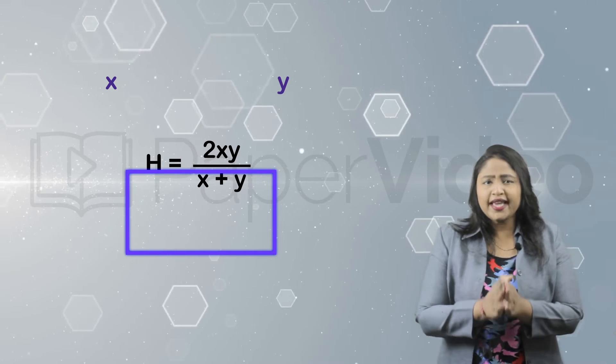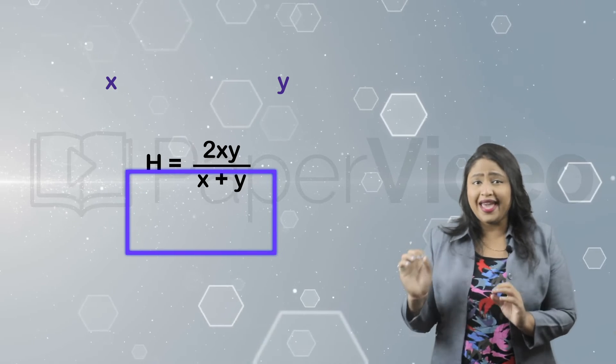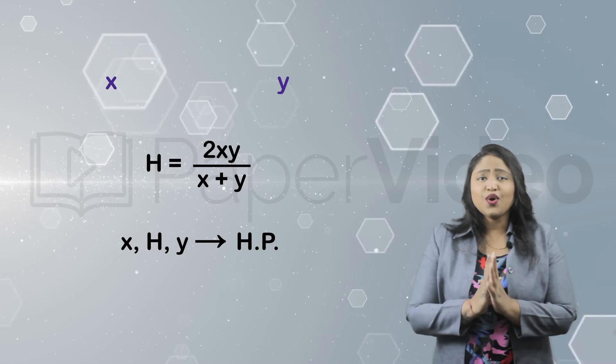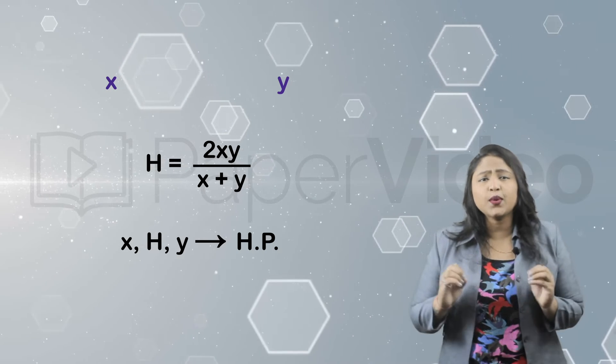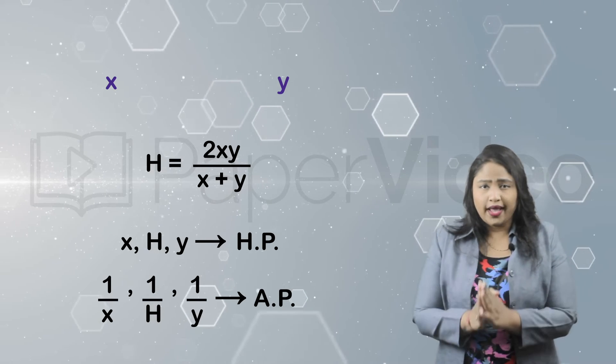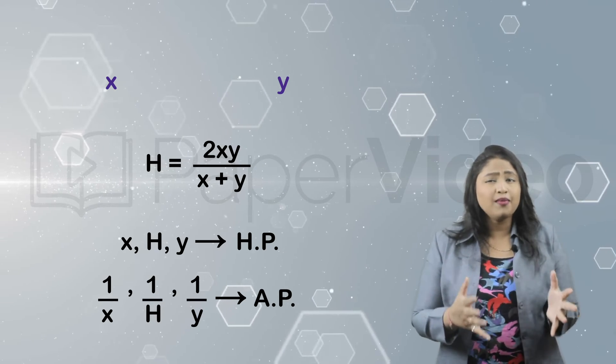The value of H will be the harmonic mean of the numbers x and y. This means that x, H, y will form a sequence in HP, and 1/x, 1/H, and 1/y will form a sequence in AP.